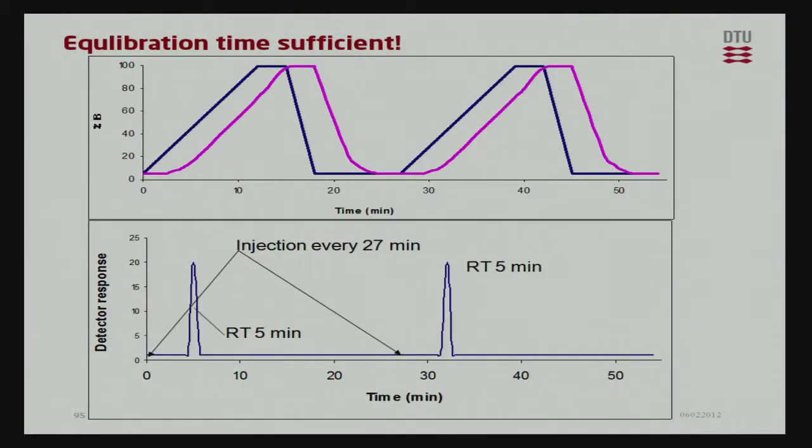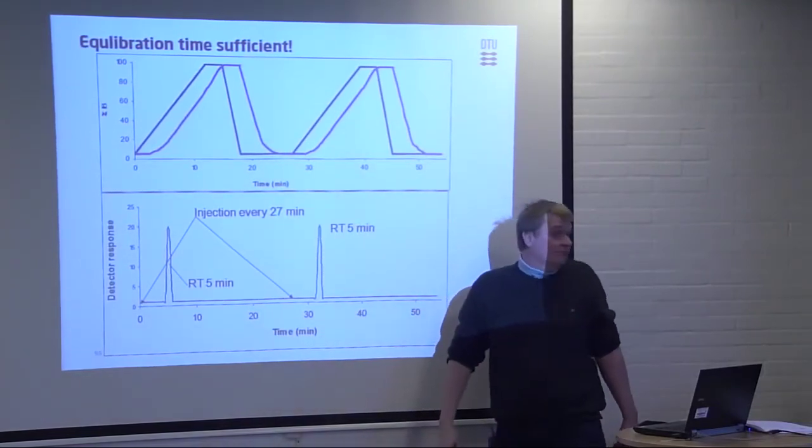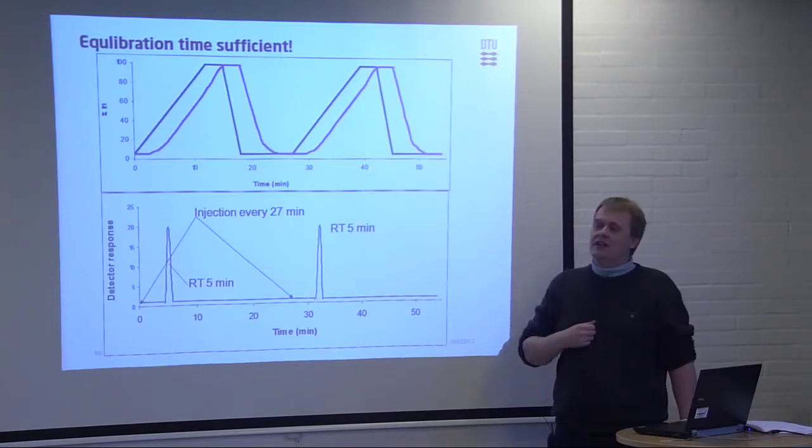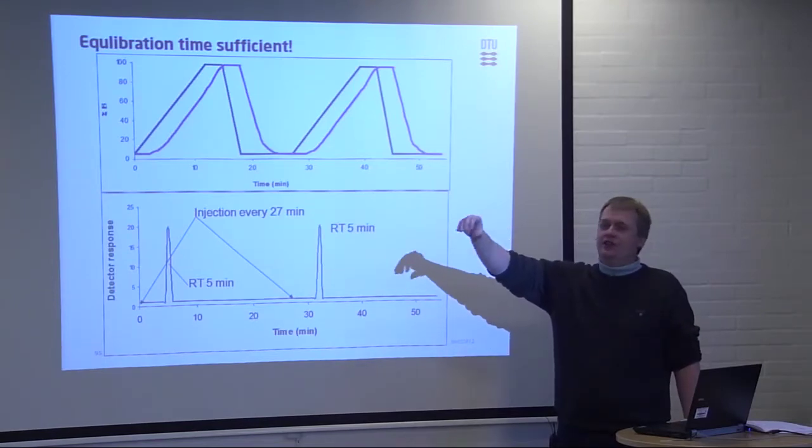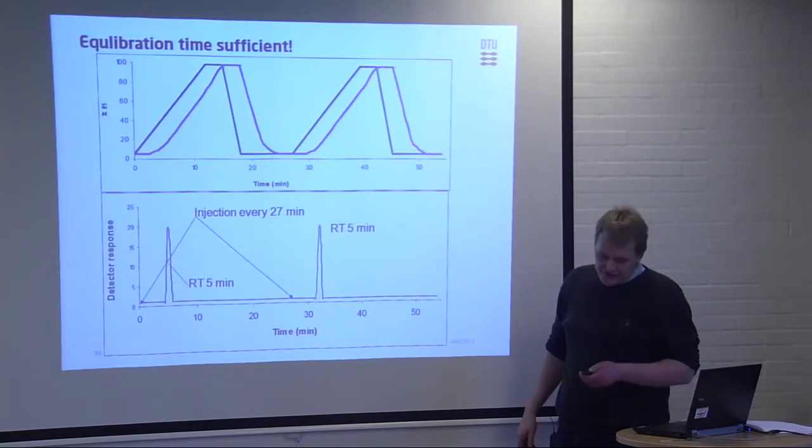And so, what you need here is really perhaps to keep down your system, perhaps up to 10 minutes, to really get your column equilibrated right. And, of course, the lower the flow rate in your column, the longer this takes.